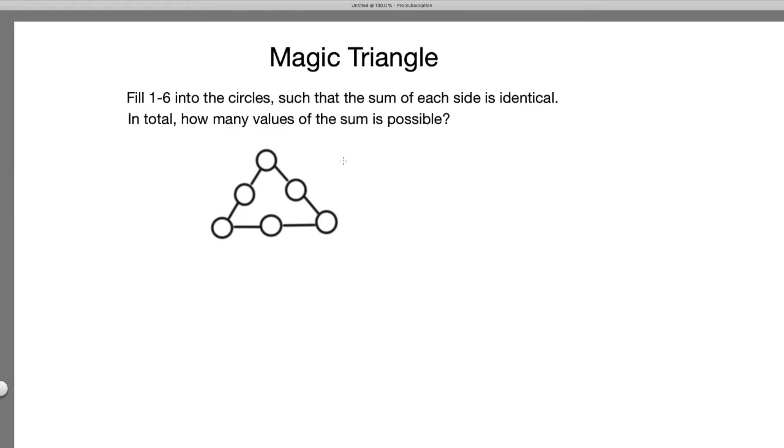10 is one such value. Now the question asks: in total, how many different values of the sum are possible? We know if the sum is 10, it's possible.